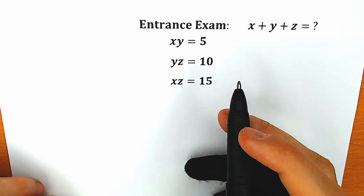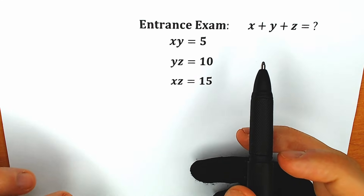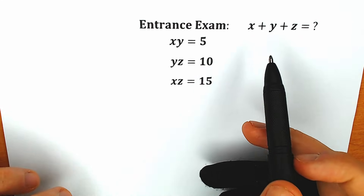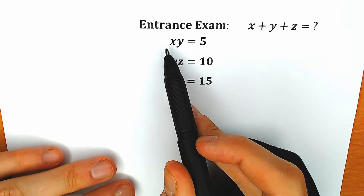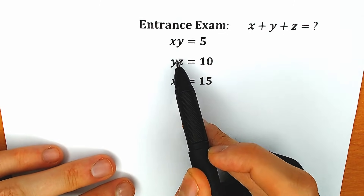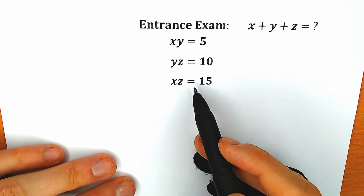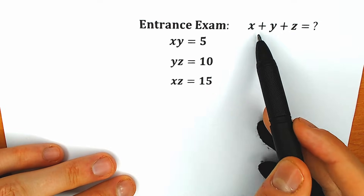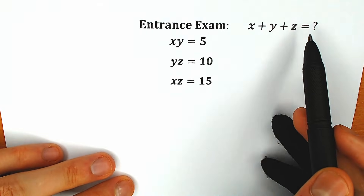Hello my friend, happy to see you here. Today we have a really interesting and tricky question from an entrance examination. We know that the product xy equals 5, yz equals 10, and xz equals 15, and we need to solve for the sum x plus y plus z.